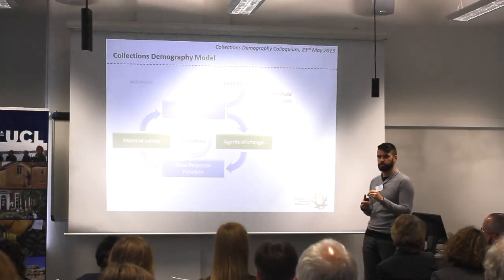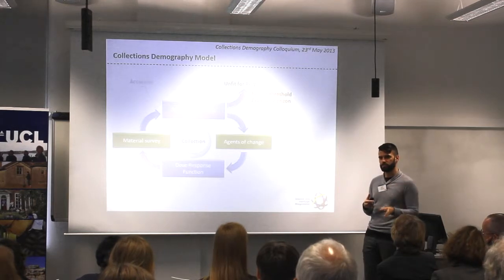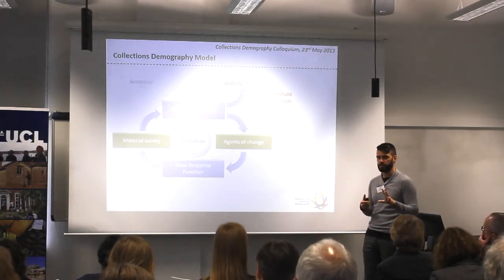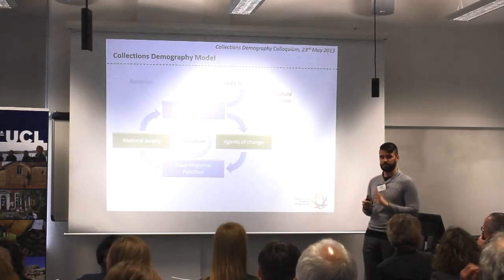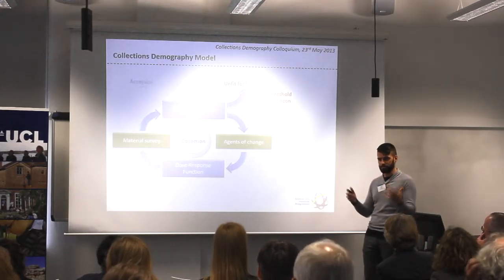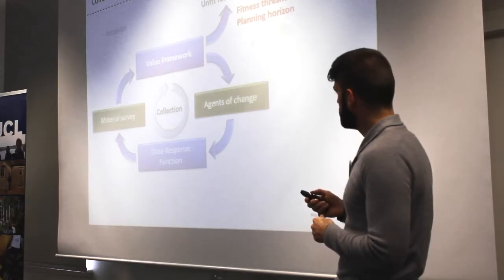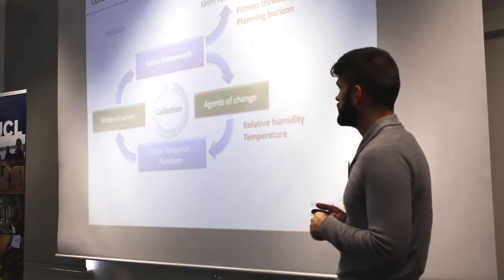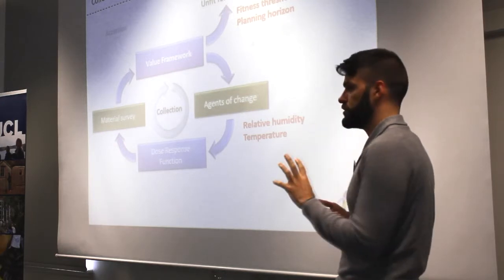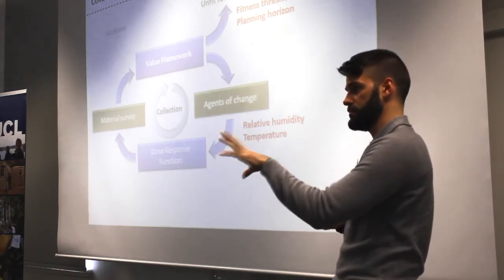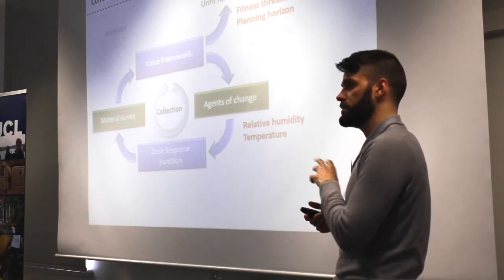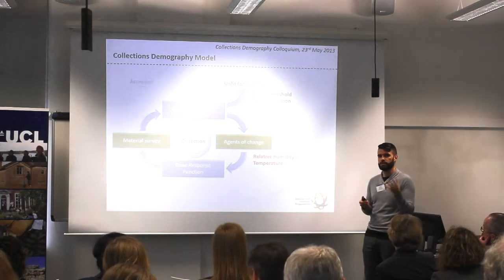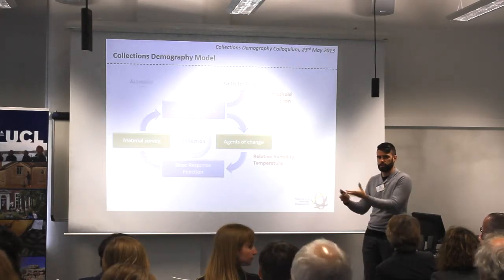The planning horizon — whether we ask the public to tell us how long they want things to last, or whether we decide, or whether we get an average figure — at the moment extends to 500 years. We thought that is a reasonable time length. The agents of change: the model looks at relative humidity and temperature, and these are not dynamic at the moment, but you can either put them in as monitored data from relative humidity and temperature sensors, or as target values of relative humidity and temperature we would like to keep the collection under.